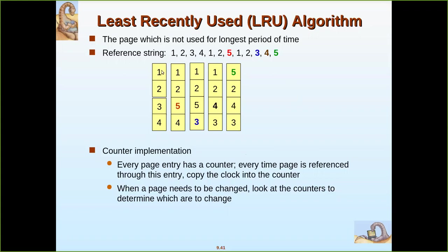If you see the order: page one was loaded first, then two, three, four, then one was referenced again, then two was referenced again. So among the current pages, three is the least recently used because after it was loaded, it was not referenced again while one and two were referenced. So three will be the victim and we replace it with five.